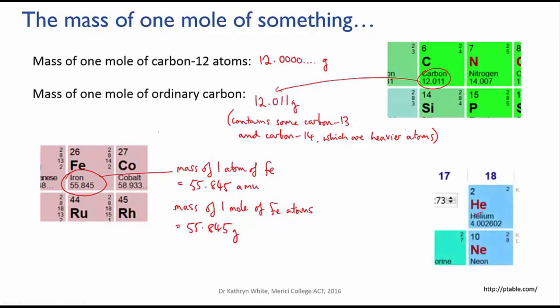The average atomic weight of a helium atom is 4.003 atomic mass units, and the mass of one mole of helium, 6.022 times 10 to the 23 helium atoms, is 4.003 grams.